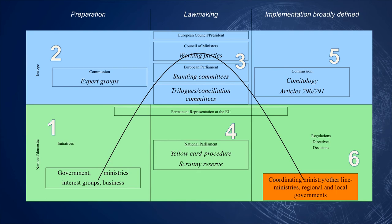Back in the member states, policy needs to be implemented. This requires, in case of directives, that the content is translated into the national legal order. This is called transposition. Regulations are already binding and do not need to be fully transposed, but still, in order to support the implementation, member states may want to make some adaptations in their national legal order. Finally, the measures are now ready for implementation, the actual bringing about of the effects proposed by the policy goals.